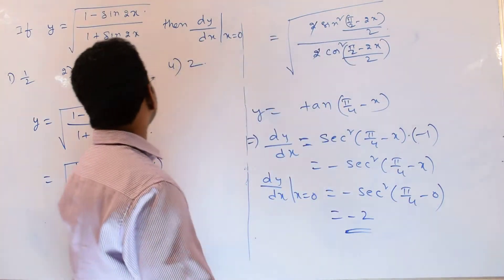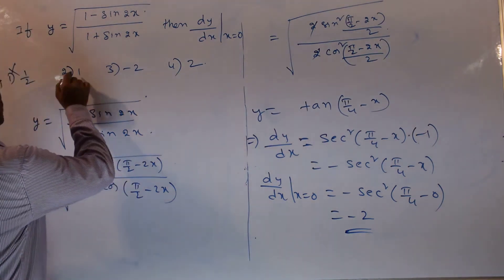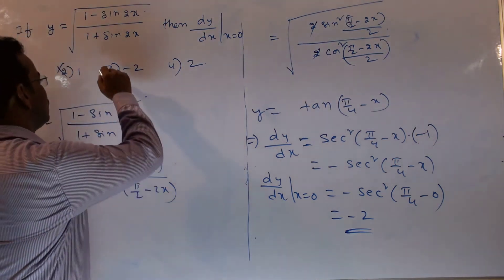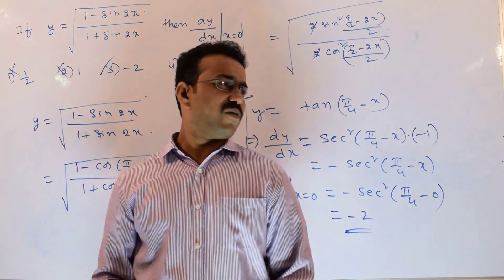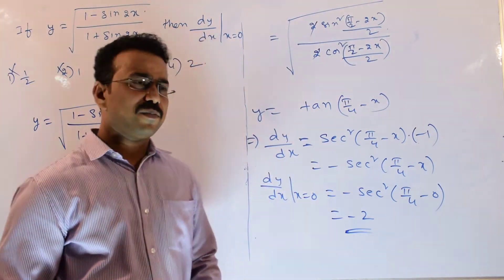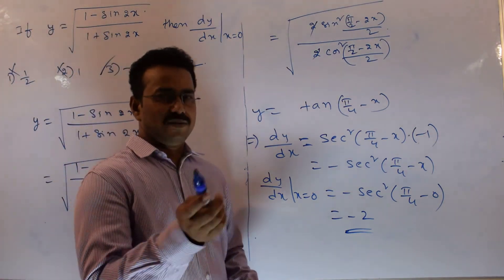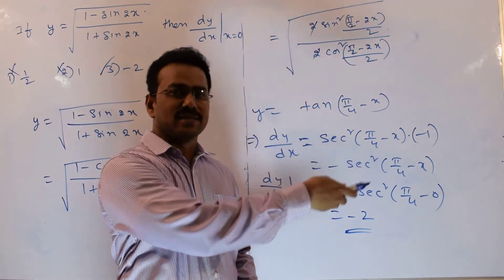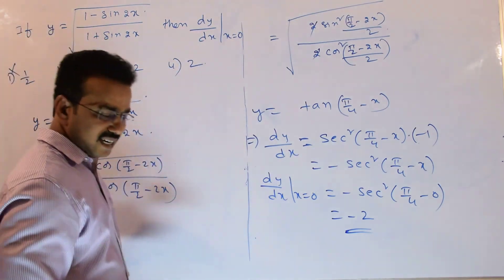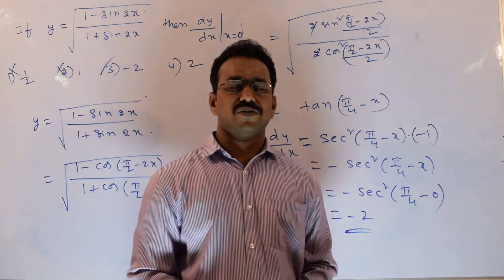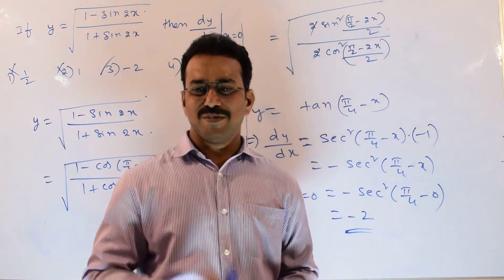Let's compare with the available options. The first option is 1/2 — incorrect. The second option is 1 — incorrect. The third option is minus 2 — correct! The fourth option is also incorrect. The key concept used here is simply applying trigonometric formulas — specifically the cos 2x and cos x formulas — to convert sine terms into cosine, simplify the expression, and then differentiate.